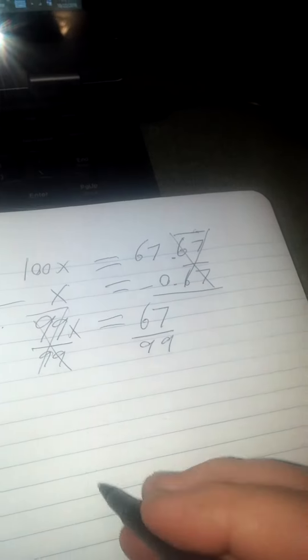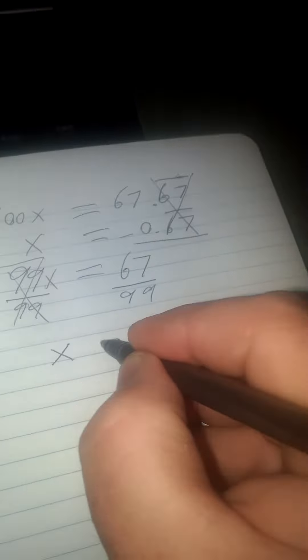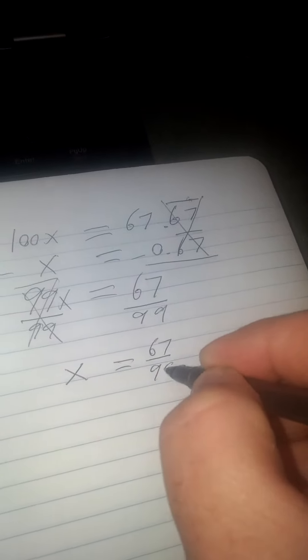This 99 over 99 becomes a 1. So I've got 1x. So x equals 67 over 99.